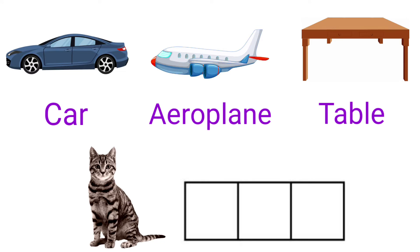First set of pictures: car, aeroplane, and table. The first letter of car is C, so we have to get the first letter C. The first letter of aeroplane is A, so we have to get the first letter A. The first letter of table is T, so we have to get the first letter T.